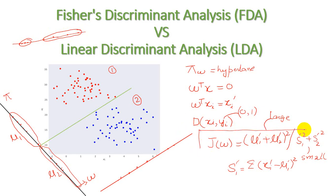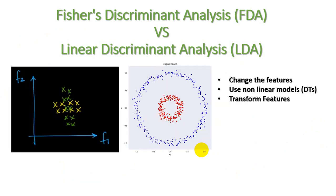FDA — Fischer Discriminant Analysis — works on this principle: we want the numerator value large and the denominator value small. Because if the numerator becomes zero, J(w) — our Fischer Discriminant Analysis — becomes zero and it fails at that point. There are many situations where FDA fails, and let us look at those.